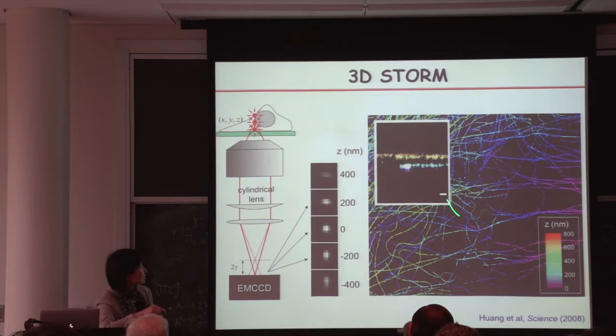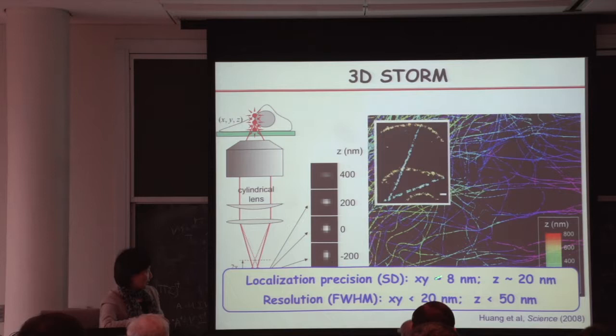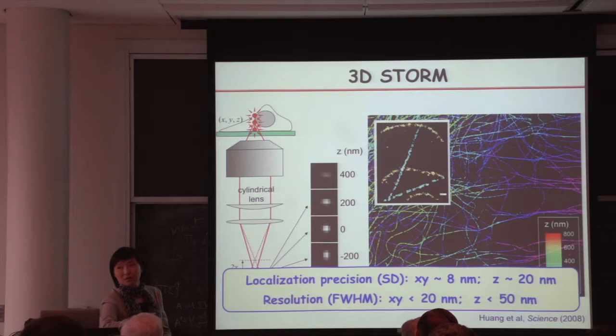We solved this by inserting a cylindrical lens into the detection path. If you've worn glasses for astigmatism, you're familiar: correction lenses are cylindrical, bending light in only one direction. As a result, single molecule images look elliptical, with ellipticity depending very sensitively on the Z position of the molecule. Conveniently, below and above focus the ellipses are elongated in two orthogonal directions, breaking the degeneracy. With this stigmatism approach we accomplish three-dimensional super-resolution relatively easily. These are microtubules imaged with 3D STORM, shown in a small area zoomed in to see the full 3D perspective.